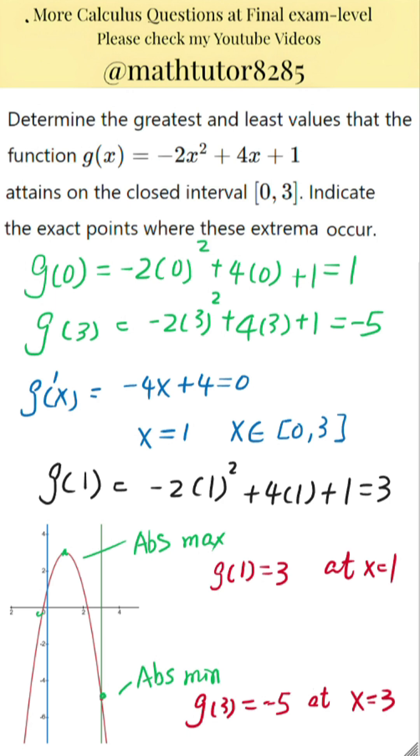To find the absolute maximum or minimum on a closed interval, always test both the endpoints and any critical points found by setting the derivative equal to 0.